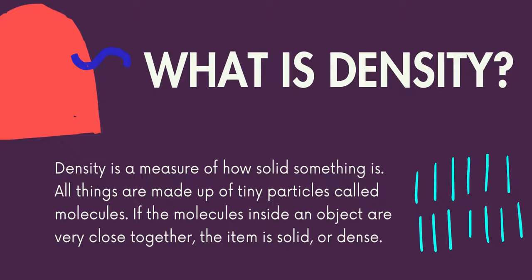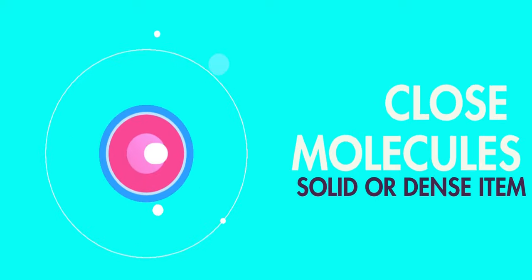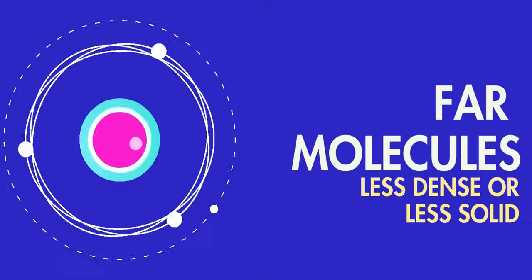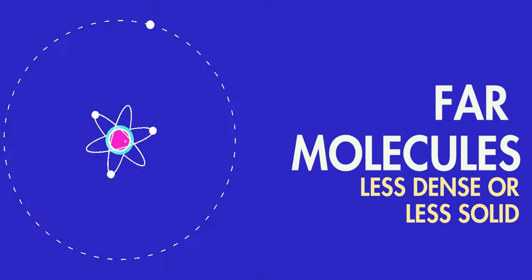If the molecules inside an object are very close together, the item is solid or dense. If the molecules are farther away from each other, the object is less dense or less solid.